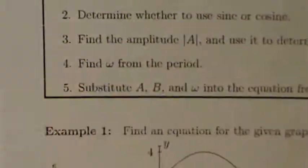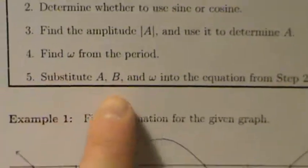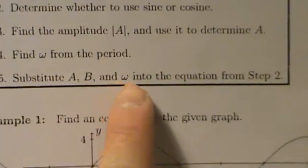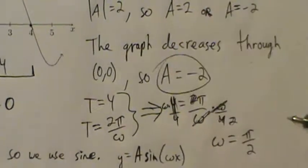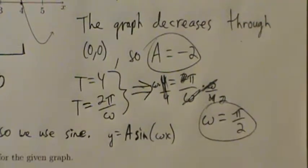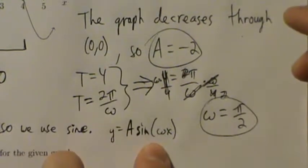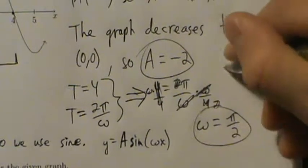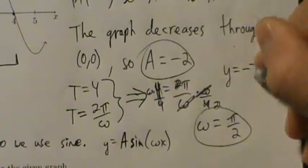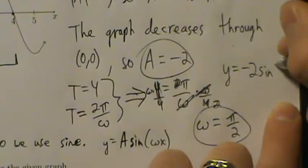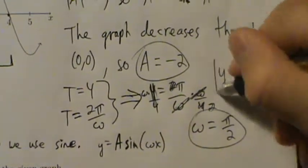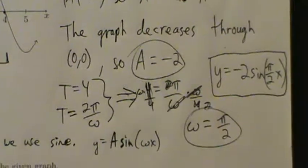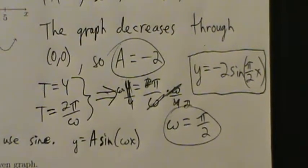Step five — not really a step, just putting it all together: substitute A, B, and ω into the equation from step two. We have B = 0, A = −2, and ω = π/2. Substituting in gives our final answer: y = −2·sin((π/2)x). Example three is coming up in the next video.